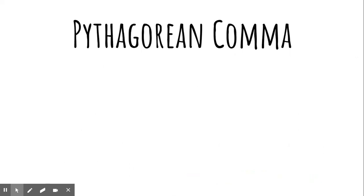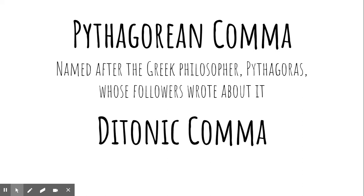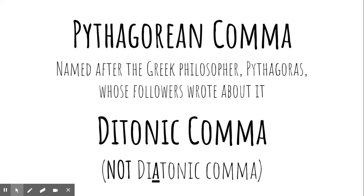In my last video, I had us experience the Pythagorean Comma. The Pythagorean Comma was named after the Greek philosopher Pythagoras, whose followers wrote about it. It is sometimes called diatonic comma, and even some other names, but I'll talk about those in another video. I want to mention that now because I don't want you to get it confused with the diatonic comma — the diatonic comma is something else.